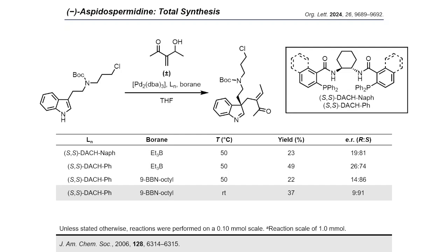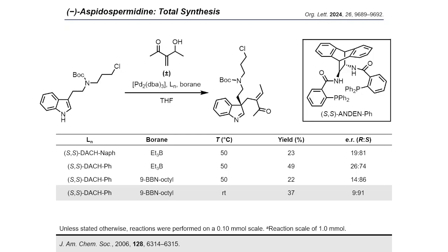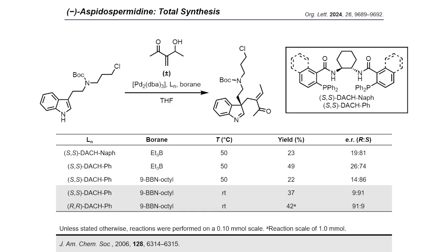Variation of other reaction parameters such as further cooling and reagent ratios did not lead to an increase in yield nor enantioselectivity. With the optimized conditions, we also applied the ANDEN-phenyl Trost ligand, which was reported to give the highest enantioselectivities in a related system reported by Trost and co-workers. However, this was not shown to be the case in our system. Finally, the optimized conditions were shown to be scalable, with the indolinine product attained in a reasonable yield of 42% and with an enantioselectivity ratio of 91:9. Crucially, all reactions proceeded with excellent chemo- and regioselectivity.